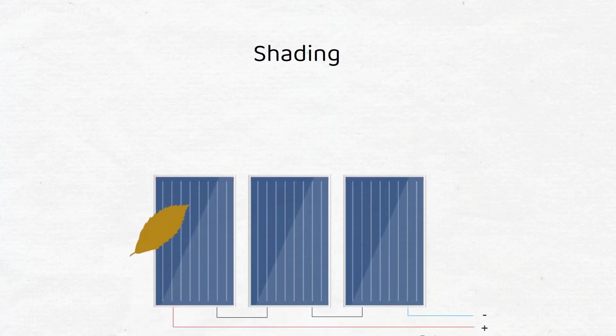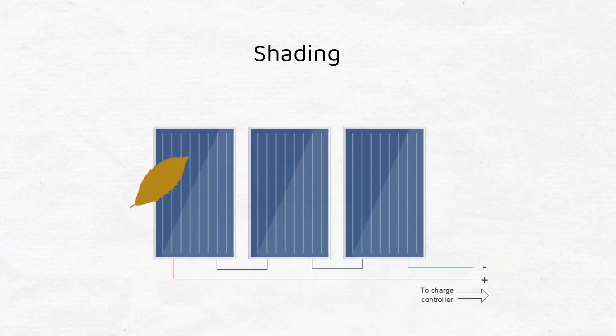Now you might think that series is the best connection to make because it will reduce your wiring cost. That is true if there is no shading. If for example there are 3 solar panels and one has shade, the whole string will suffer a reduced current output because shade has impact on current, not voltage.